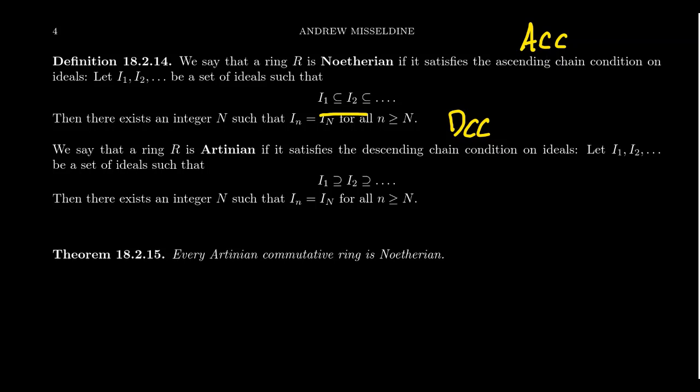Now these two notions, of course, sound very similar — the ascending chain condition, the descending chain condition. And in many algebraic categories, these two notions are independent of each other. You can have a Noetherian algebra that's not Artinian, and you can have Artinian algebras that are not Noetherian. Module theory, of course, is a place where such a thing plays out. But when it comes to commutative rings, I'm going to just state this without proof: every Artinian commutative ring is in fact Noetherian — that for commutative rings, if you have the descending chain condition, that implies the ascending chain condition. The proof of that goes beyond the scope of our lecture series, so I mostly just wanted to mention this for the sake of exposure.